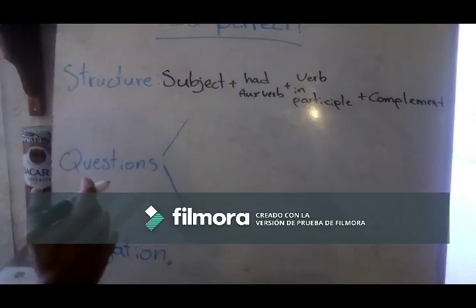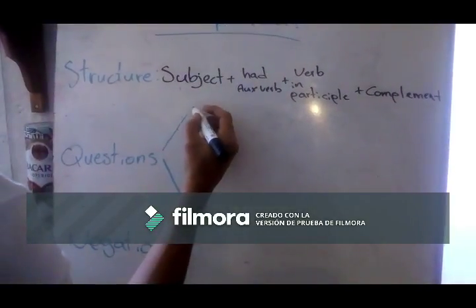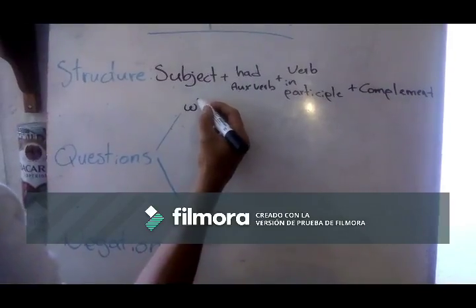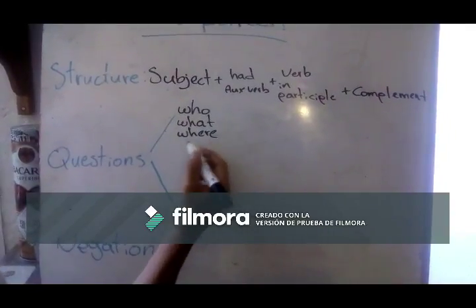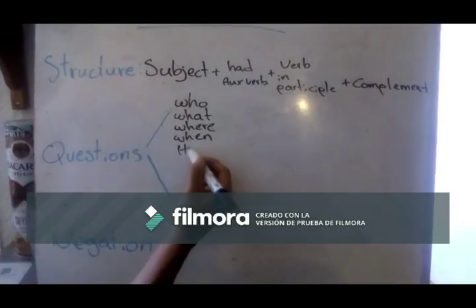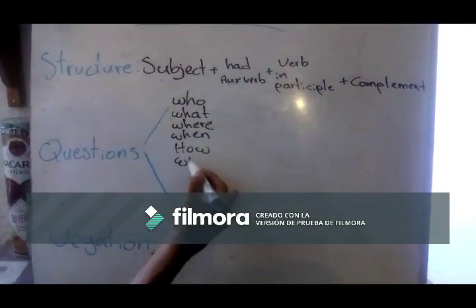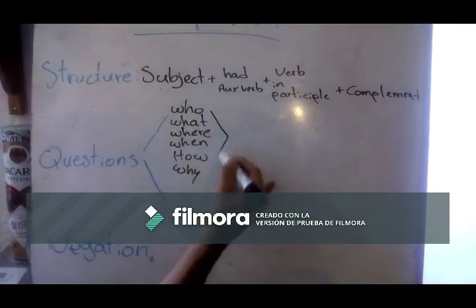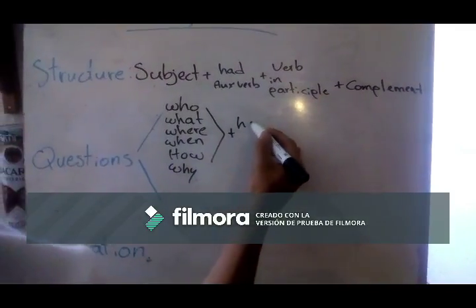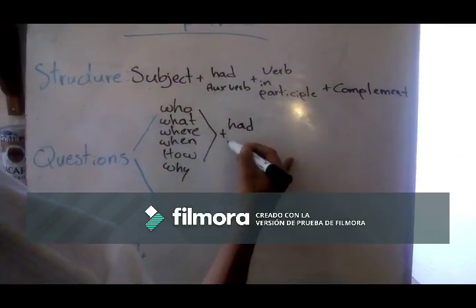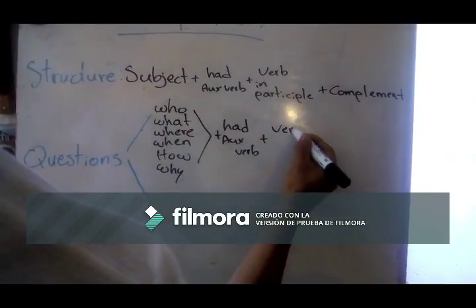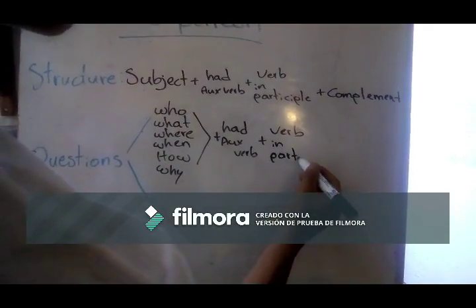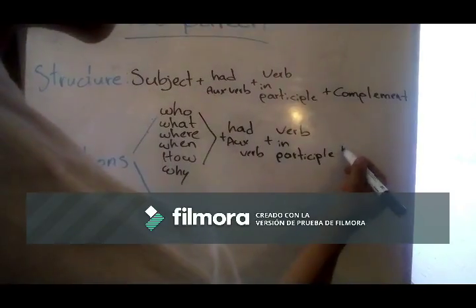Now we will see how to structure questions. It depends. We have WH questions, like: who, what, where, when, how, why — and all of these, plus also our auxiliary verb 'had', plus the verb in participle, and our complement.